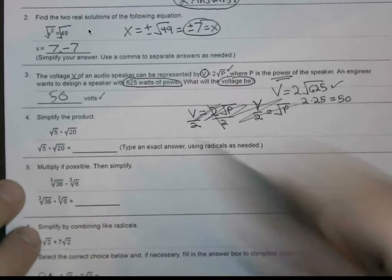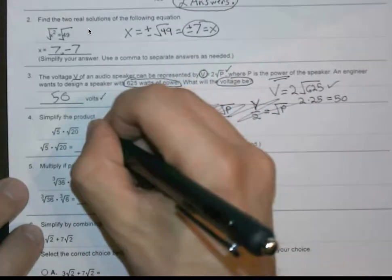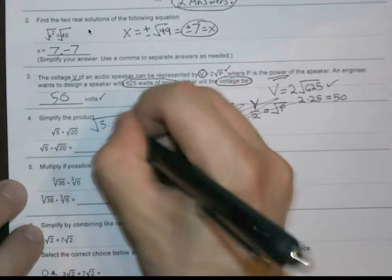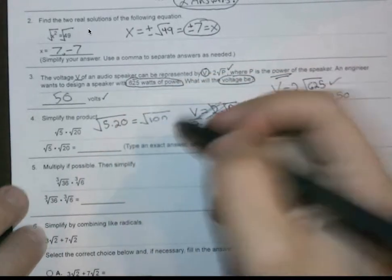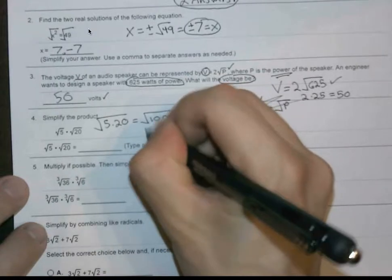Simplify the product. Since these have the same index, we're allowed to take this further. So 1 radical, 5 times 20, square root of 100. Since we're not solving for x, we can just leave this as positive 10.